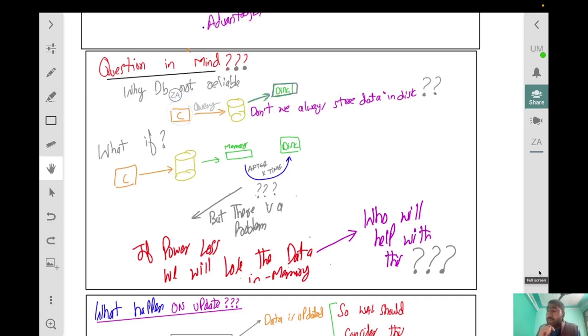The problem is for every single query we have to write to the disk and it's going to be very slow. What if we have a system where the first thing we do is put data into memory and somehow magically as a system we asynchronously write to disk over time?